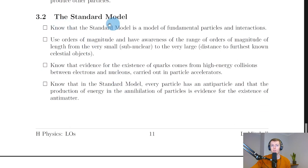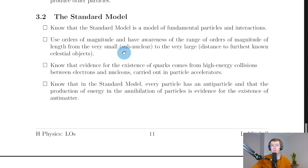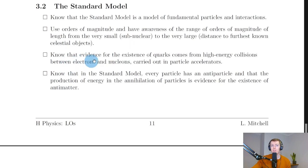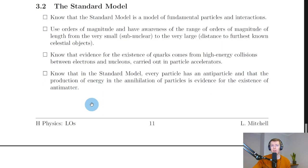Moving on to section two, the standard model. You should know that the standard model is a model of fundamental particles and interactions. You should be able to use orders of magnitude — which just means powers of 10 — and have awareness of the range from the very small (sub-nuclear) to the very large (such as the distance to the furthest known celestial objects). Evidence for the existence of quarks comes from high energy collisions between electrons and nucleons carried out in particle accelerators. In the standard model, every particle has an antiparticle, and the production of energy in the annihilation of particles is evidence for the existence of antimatter. For example, when an electron and its antiparticle the positron collide, they annihilate and produce gamma rays, and this production of energy provides that evidence.